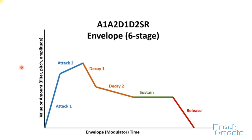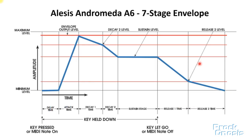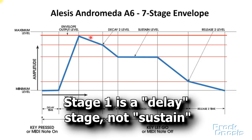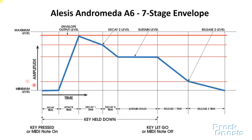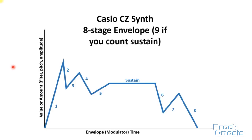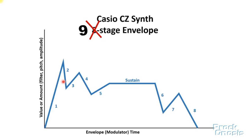Some envelopes can be much more complex. This is a six-stage envelope where the attack and decay parts each have two stages. This is an envelope for the Alesis A6 Andromeda, and notice this one has seven stages — one sustain, plus attack, decay, and two parts to the release stage. The Casio CZ series had nine-stage envelopes, though Casio didn't count the sustain as a stage and claimed it was eight stages. That was the first synth I ever got comfortable programming, so I was a little disappointed when I discovered most synths only had the more common ADSR envelope.